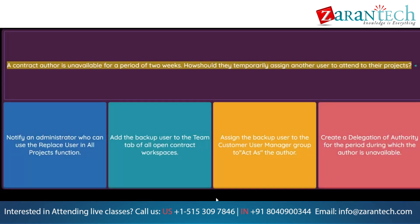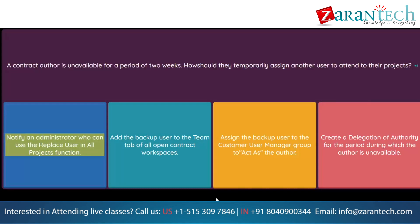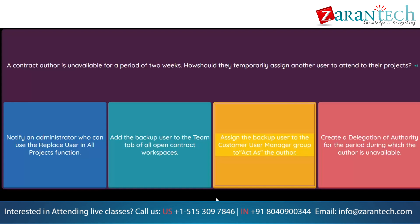Question: A contract author is unavailable for a period of two weeks. How should they temporarily assign another user to attend to their projects? Option 1: Notify an administrator who can use the replace user in all projects function. Option 2: Add the backup user to the team tab of all open contract workspaces. Option 3: Assign the backup user to the customer user manager group to act as the author. Option 4: Create a delegation of authority for the period during which the author is unavailable.